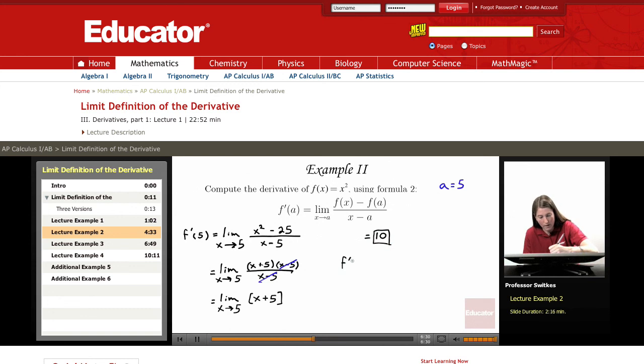Stating our conclusion: we found that f'(5) = 10 for f(x) = x². That's the same result we got in example 1. We're simply using a different formulation for the limit definition of the derivative.